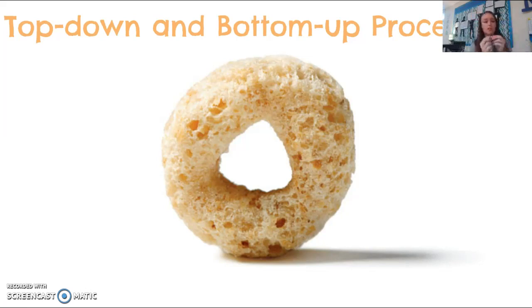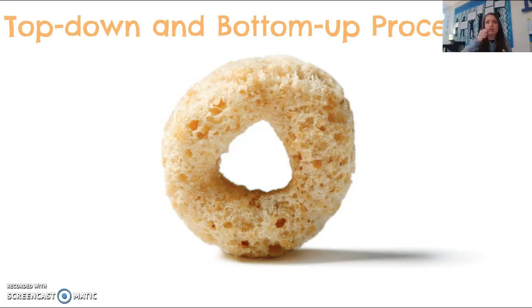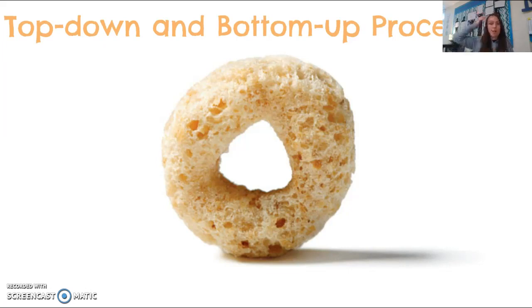Now if you give that same Honey Nut Cheerio to someone else and instantly, with their eyes closed, they say 'this is a Honey Nut Cheerio' — what they've done is bypass the sensation step and interpreted it based on past experience. They've had a Honey Nut Cheerio before, they know what it is, and they interpret it based on a mental construct they already had. They didn't have to work through 'it's crunchy, it's round.' They went straight up and interpreted from a mental construct. That's top-down processing — you get a sense, but you interpret it from something up here, from the top.